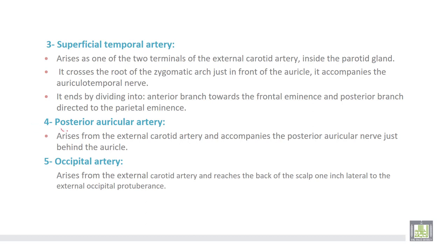Number four, the posterior auricular artery arises from the external carotid artery and accompanies the posterior auricular nerve just behind the auricle. Number five, the occipital artery also arises from the external carotid artery and reaches the back of the skull one inch lateral to the external occipital protuberance.